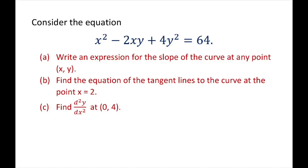Hi everyone! We're going to consider this equation and write an expression for the slope of the curve at any point xy, which means we're going to take the derivative and solve for dy/dx. Since we have this xy mix, we have to use implicit differentiation. Then we'll write the equation of the tangent lines to the curve at x equals 2, and find the second derivative at (0, 4).